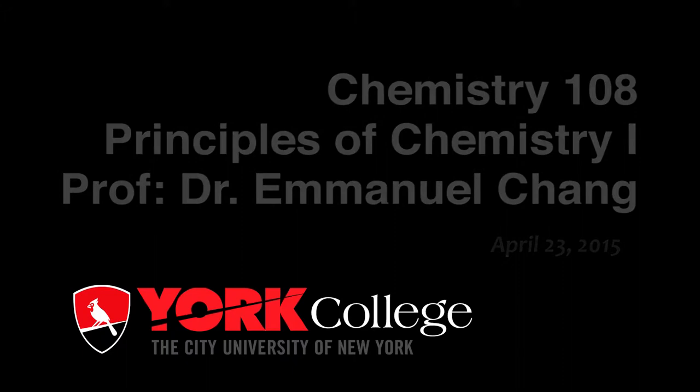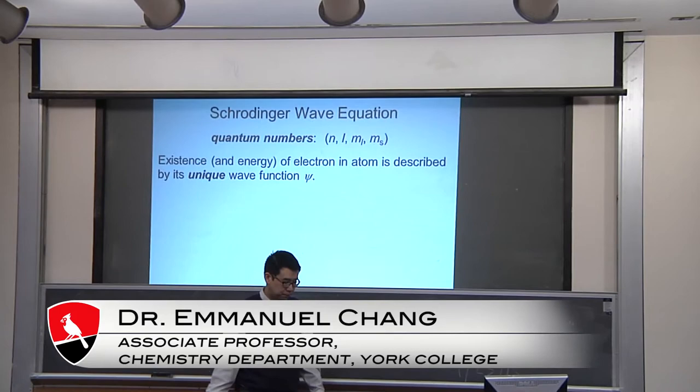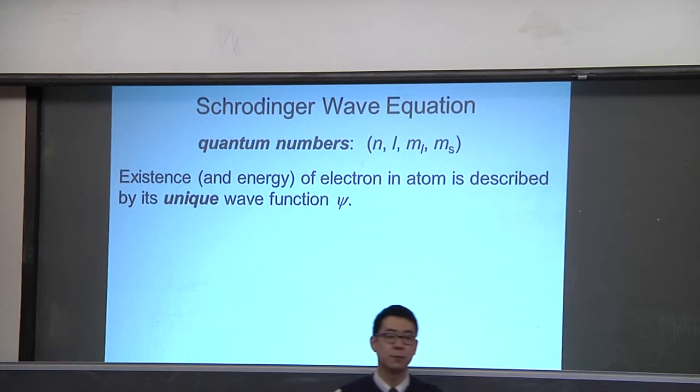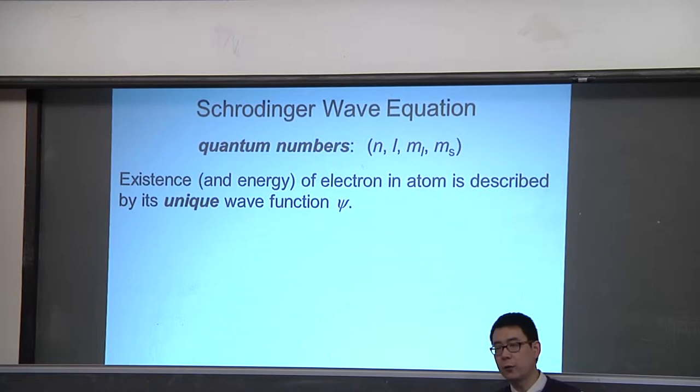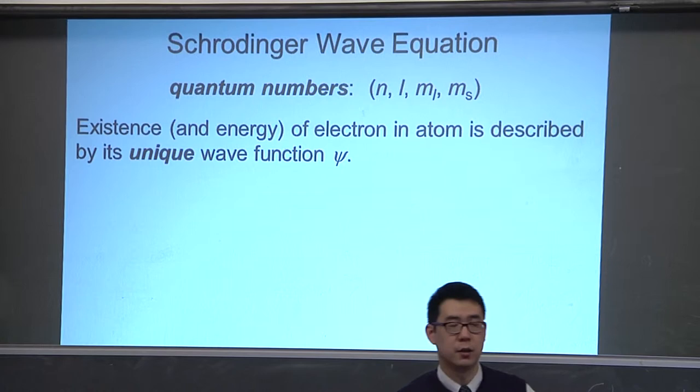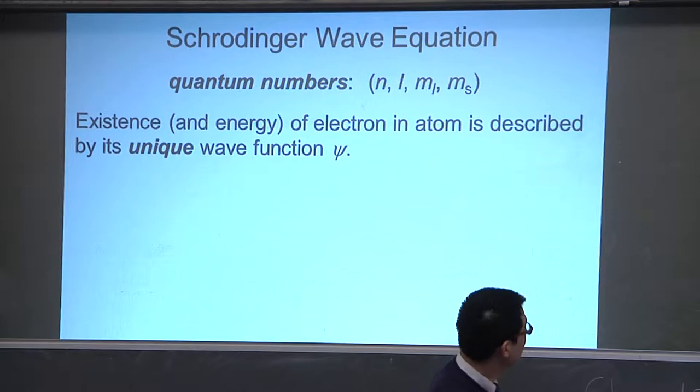This is Chemistry 108 at York College, April 23rd, 2015. We are continuing in chapter seven. The Schrödinger wave equation gives you a series of quantum numbers which describe a function that describes each unique electron within an atom or molecule.